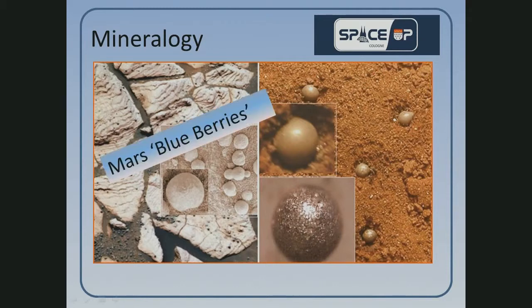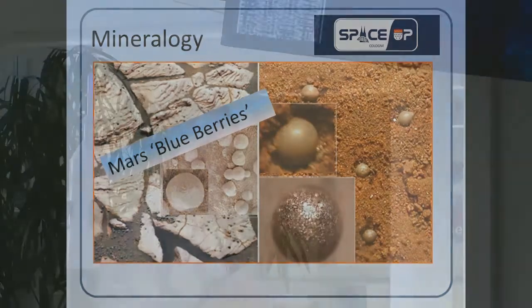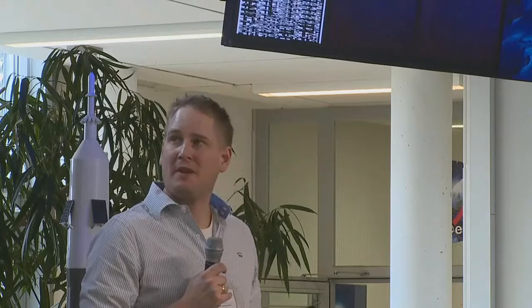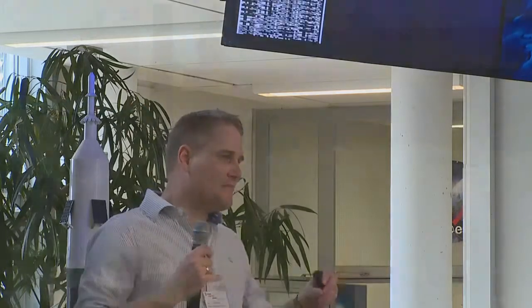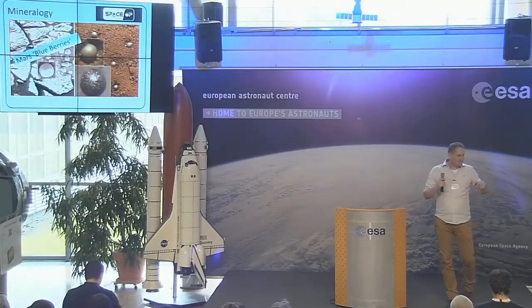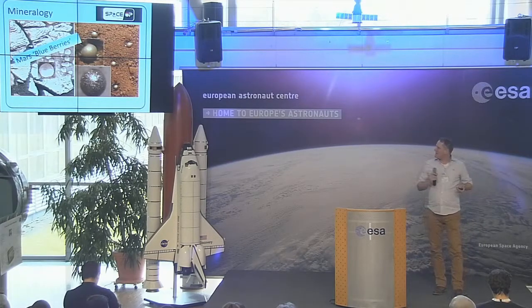Also found are the so-called Mars blueberries - the mineral hematite - which caused quite a lot of excitement 10 to 20 years ago because this was deemed one of the proofs that Mars formerly had water. These minerals are indeed usually formed in water-rich areas. There's some iron in the soil, water seeps in, and they form these nice little round bulbs.